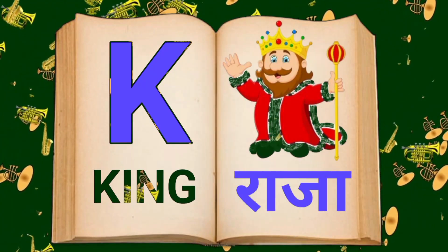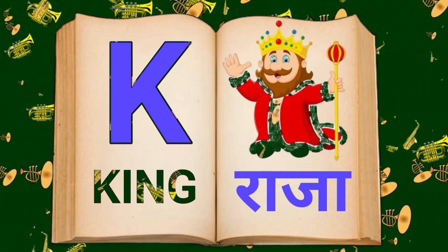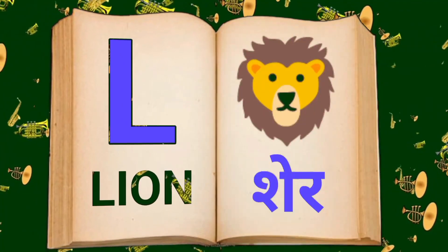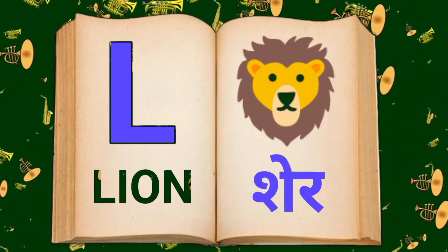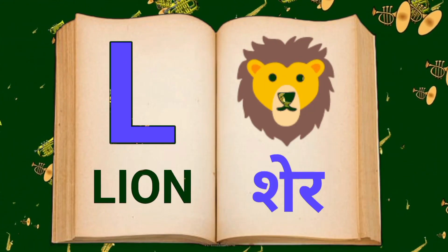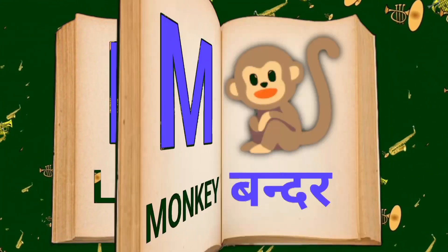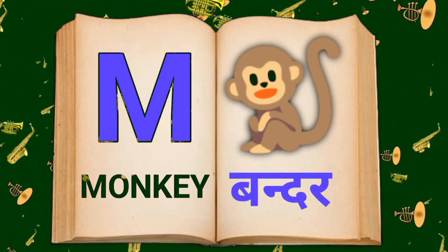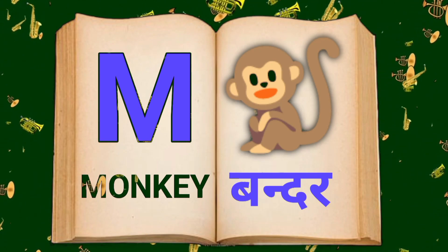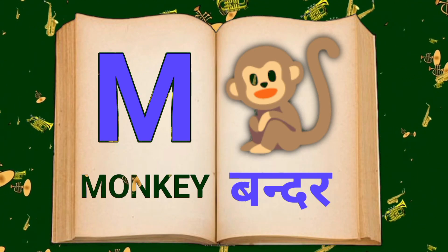K for King, King means raja. L for Lion, Lion means shee. M for Monkey, Monkey means bandar.